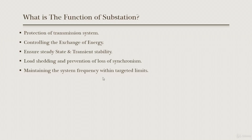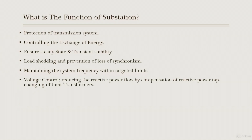For example, the system frequency in Egypt is 50 Hz. We can control the frequency between 50 and 50.5 Hz as a maximum, or down to 49.5 Hz as a minimum. If the frequency exceeds or drops below these limits, devices inside the substation start working to maintain the frequency within the target range. The substation also contains devices for voltage control.